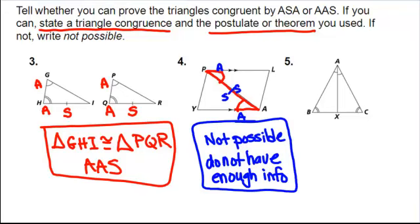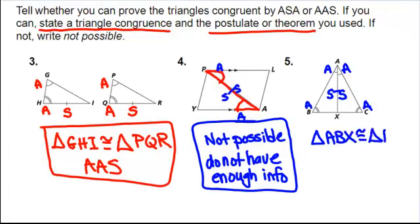For problem 5, I have two triangles — triangle ABX and triangle ACX — each with two angle markings that match. I can also see a common side AX, so AX is congruent to AX by the reflexive property. Now I have angle, angle, side, so triangle ABX is congruent to triangle ACX by angle-angle-side.